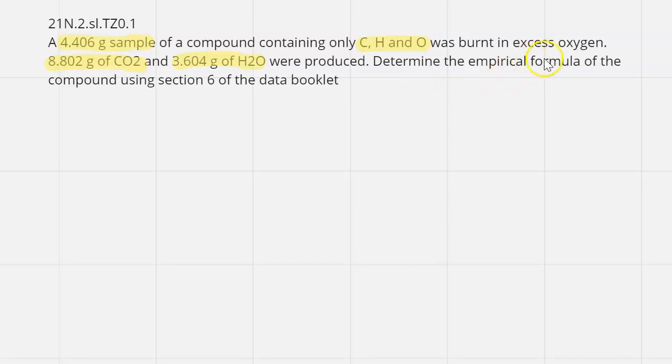The way you would approach any empirical formula would be to get yourself organized by the type of elements. Here we have three different elements: carbon, hydrogen, and oxygen. I like to put them in a table like this so it's nice and organized and easy to see.